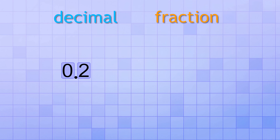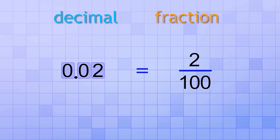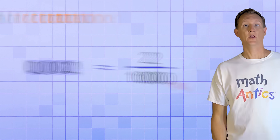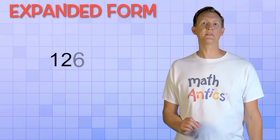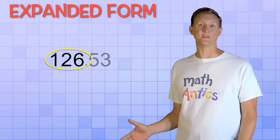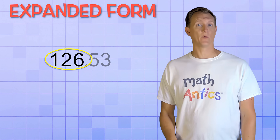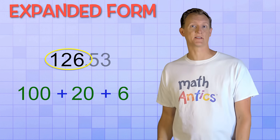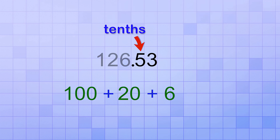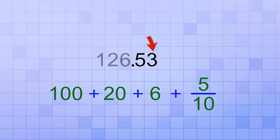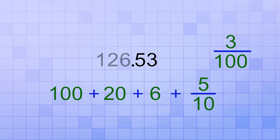And just like a 2 in the tenths place stands for the place value 2 tenths, a 2 in the hundredths place stands for the place value 2 hundredths, and a 2 in the thousandths place stands for the place value 2 thousandths. Knowing that will help us write decimal numbers in expanded form, like the one we saw earlier: 126.53. The expanded form of the whole number part is easy — 126 is 100 plus 20 plus 6. But now we need to add the fractions represented by the decimal digits too. Since there's a 5 in the tenths place, that stands for 5 tenths, so we add the fraction 5 over 10. We also have the digit 3 in the hundredths place, which stands for 3 hundredths, so we also add the fraction 3 over 100 to our expanded form.